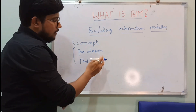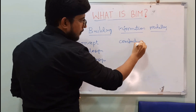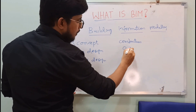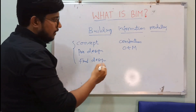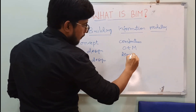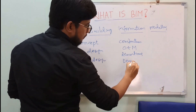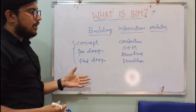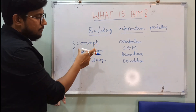After the design stages, we start with construction. After construction and handover, there is an operation and maintenance stage — also called the facility management stage. Then we have renovations in between, and finally demolition. All together, this is the life cycle of a project, starting from concept and ending at demolition.